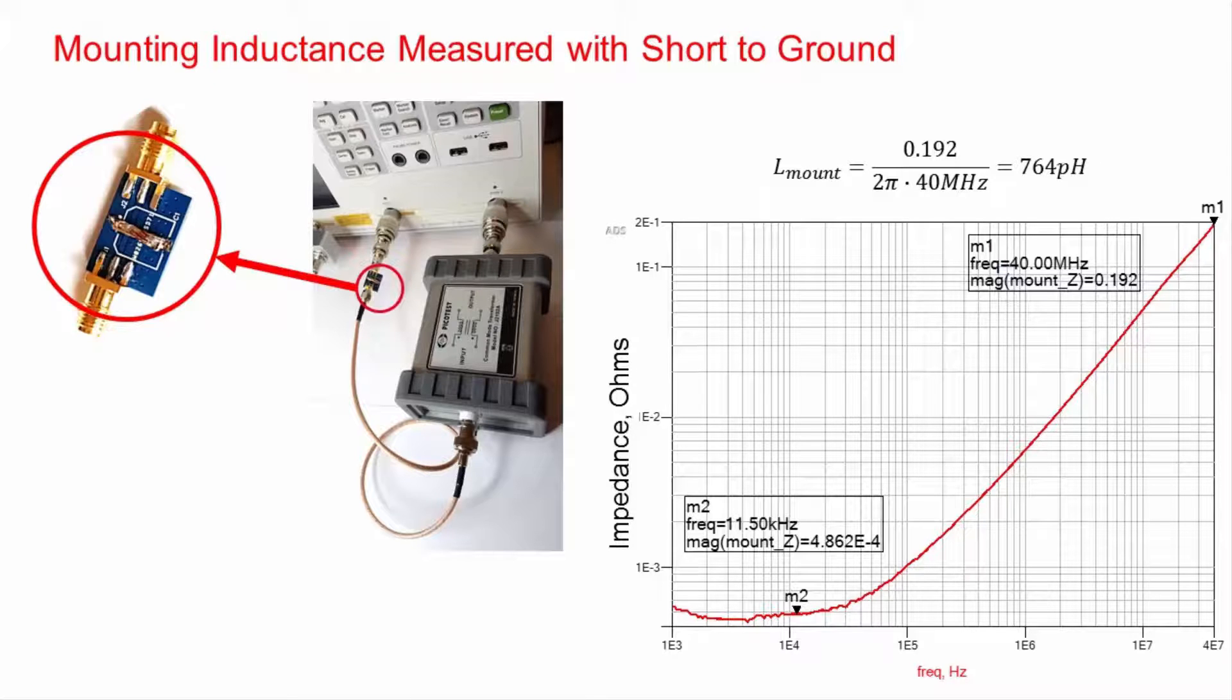When measuring low impedance at low frequency, keep the connections as short as possible, especially the connection to port 1. This mount is 486 micro-ohms and 764 picohenries. The resistance is generally low enough to ignore, and the inductance can be subtracted from the measured ESL to obtain the model with the mount removed.